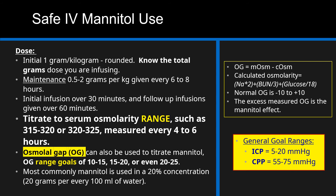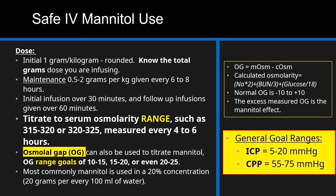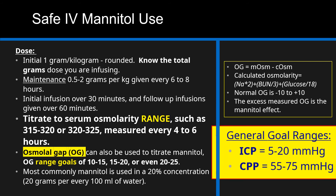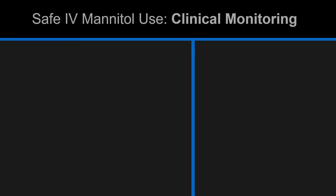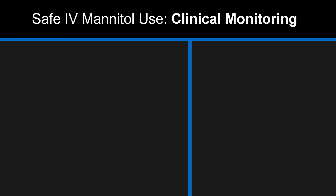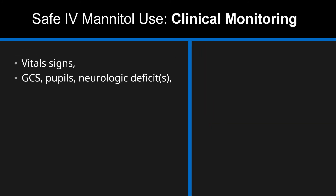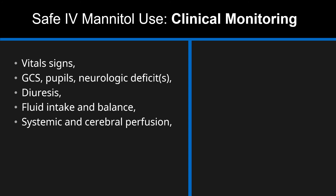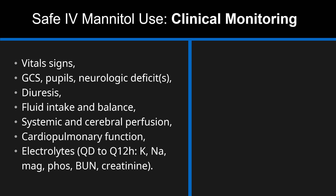Monitor the vital signs, neurologic deficit, the Glasgow Coma Scale, pupils, hourly diuresis, fluid intake, hourly fluid balance, systemic and cerebral perfusion, cardiopulmonary function, potassium, sodium, magnesium, phosphorus, creatinine and BUN, and consider calculating the osmolar gap.